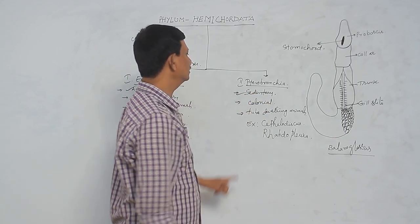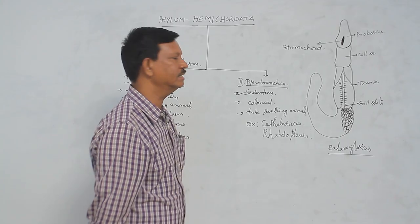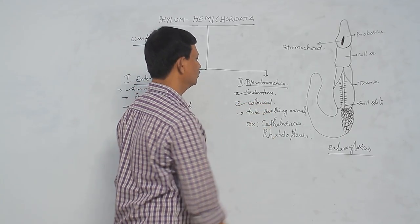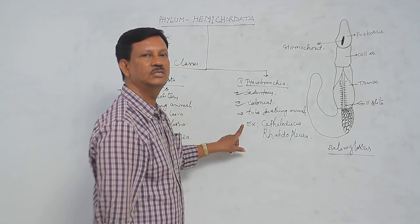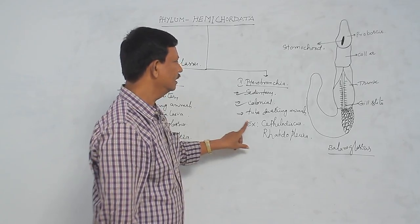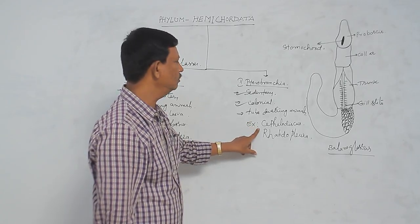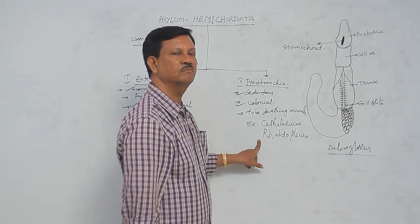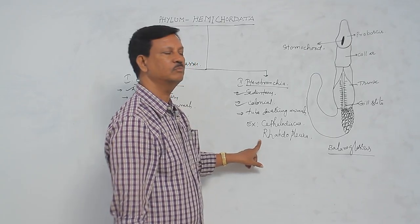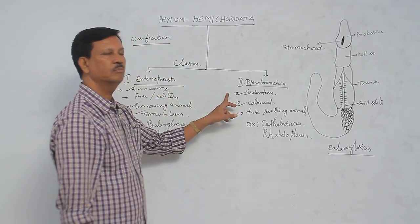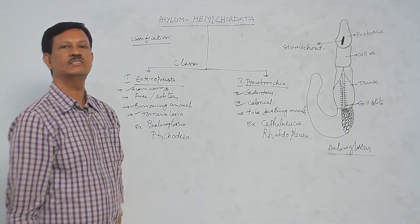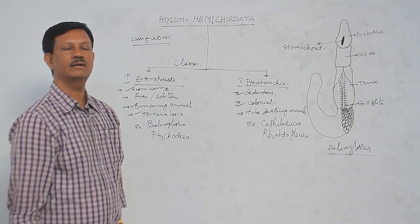They are not solitary. A group of animals are found together. That is why they are colonial forms, and they are tube-dwelling animals. Examples are the Cephalodiscus and Rhabdopleura. These are the two examples that come under Tyrobranchia. This is the classification of the phylum Hemichordata.